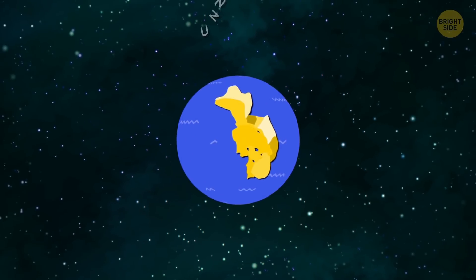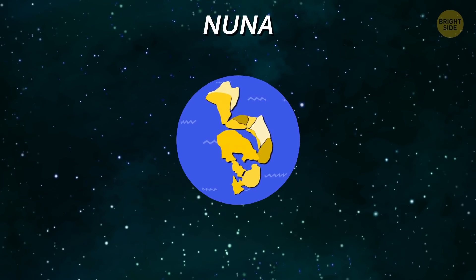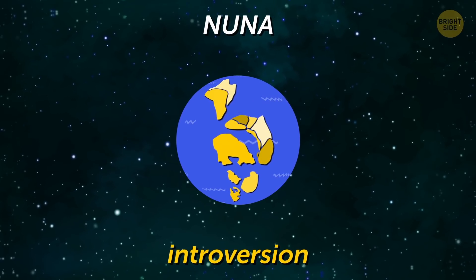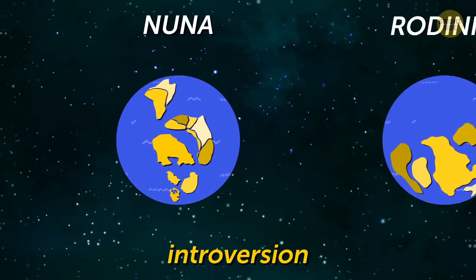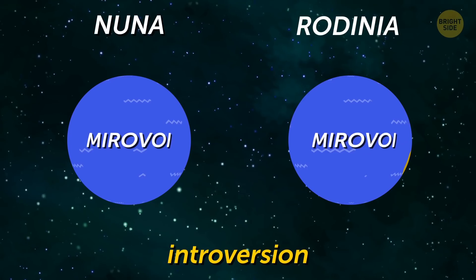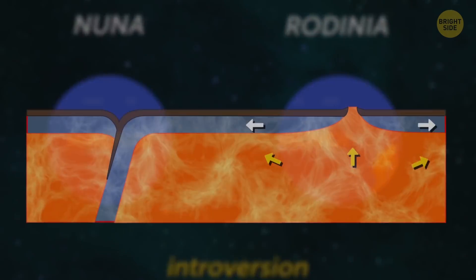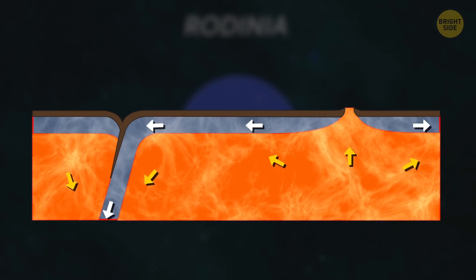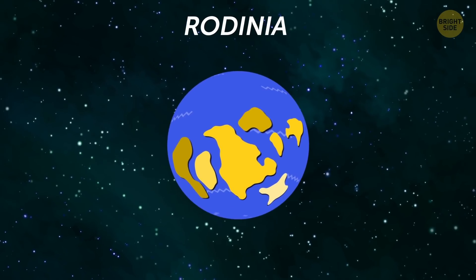Let's go back to the Nuna supercontinent that I told you about at the beginning. When that happened, it occurred through introversion. Both Nuna and Rodinia had the same superocean surrounding them. That ocean was called the Mirovia. When the oceanic crust started to subduct, Rodinia began separating and the sea disappeared.